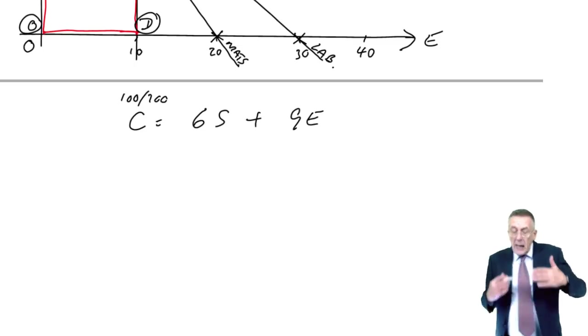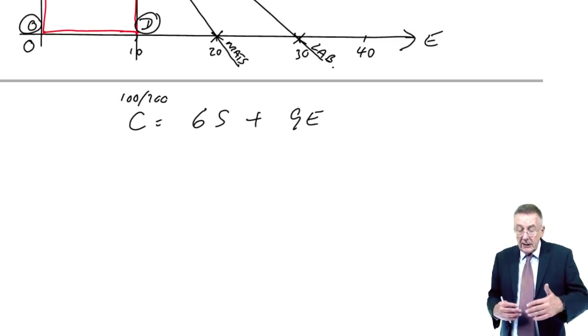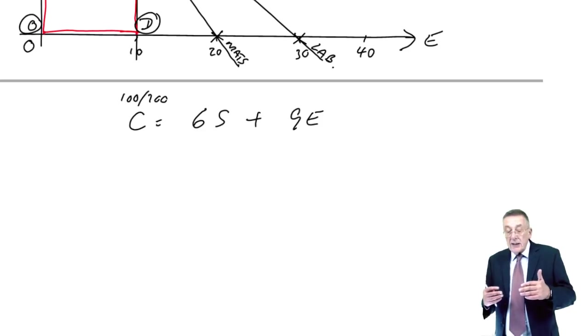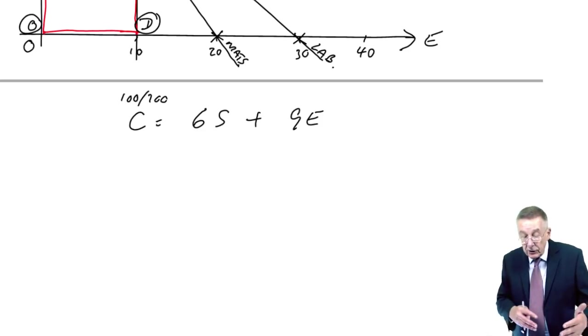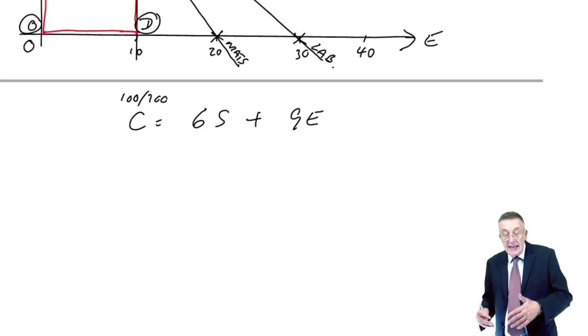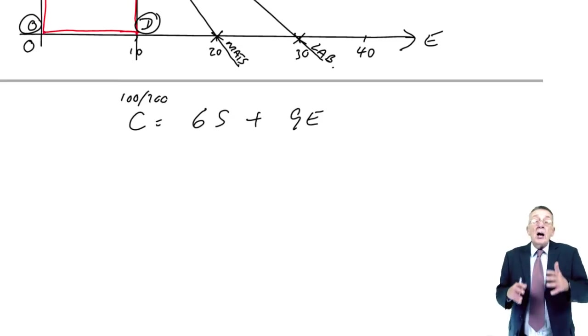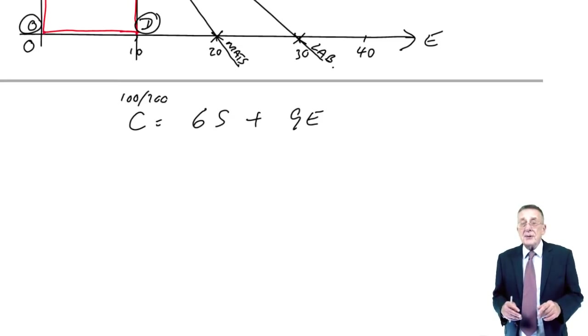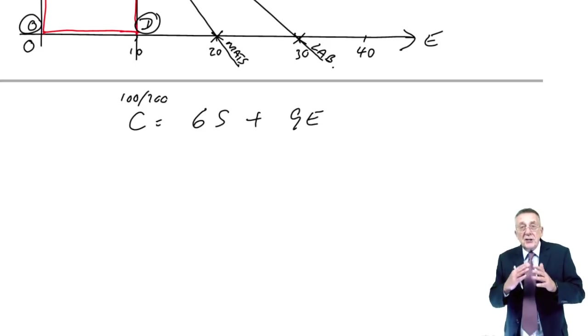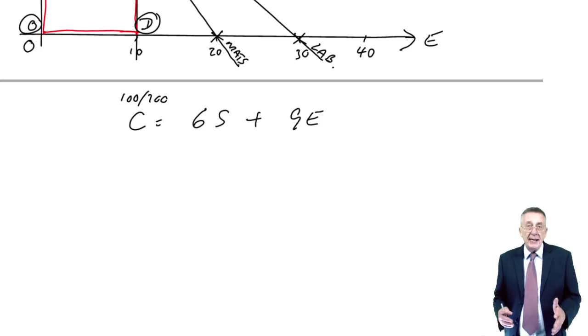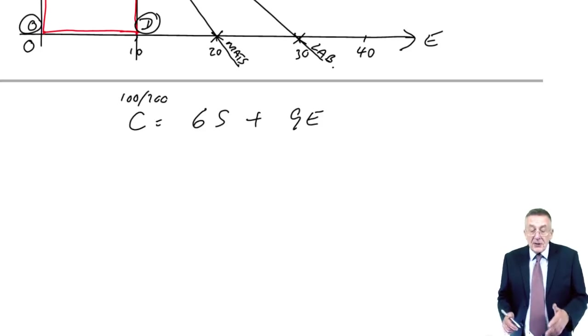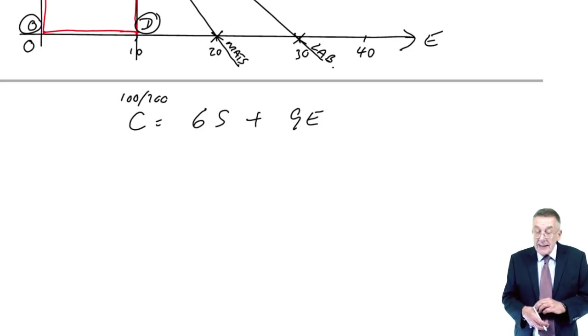But the lines, the combinations, it'll be a straight line again, that whether it's 6s plus 9e is 100, or whether it's 6s plus 9e is 200, or whether it's 6s plus 9e is 300. Although we'll end up with different lines, the angles, the gradient, the slope of the line will be the same. And as you'll see, that's all we actually need to know.